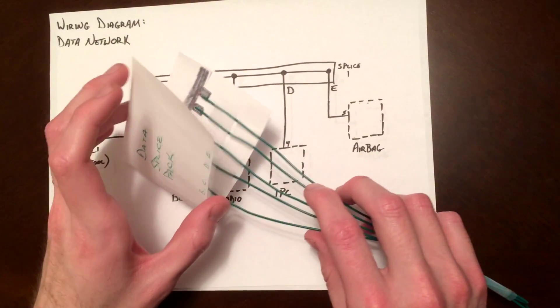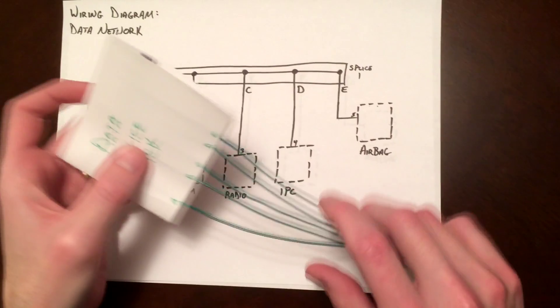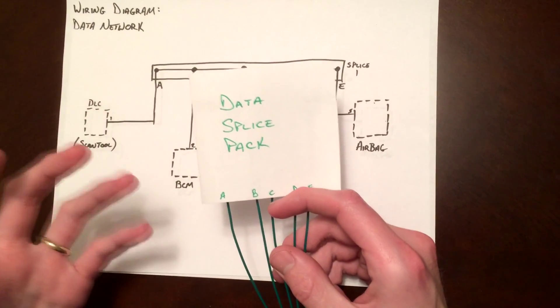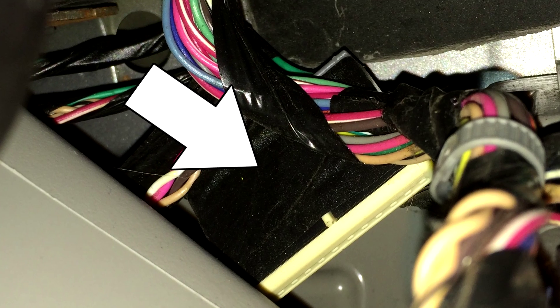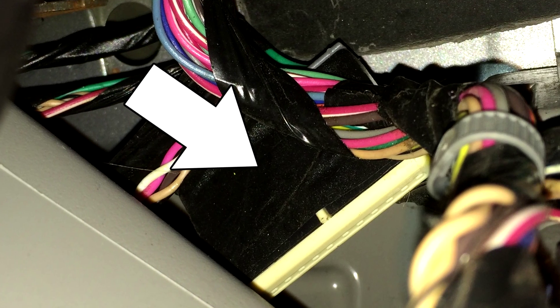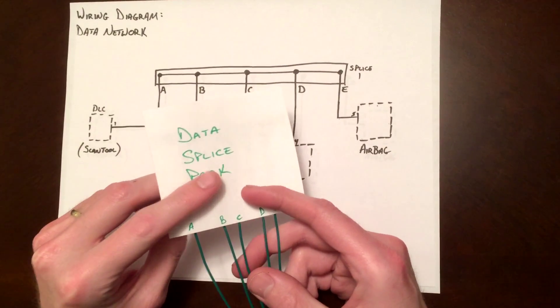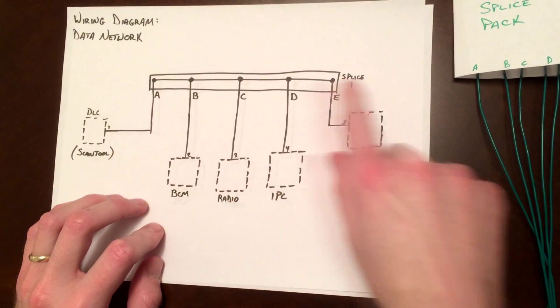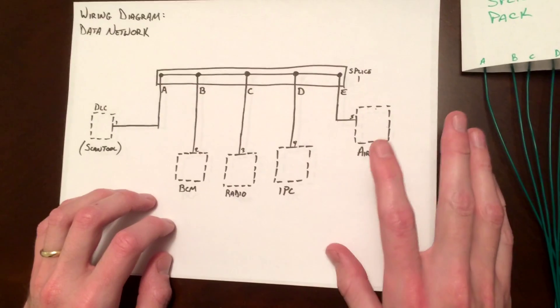All the different modules are connected together by a splice pack, usually found underneath the dash, underneath the steering wheel. And this splice pack will link all the modules together. I drew up a little diagram showing you this is what you'll find in your service info.